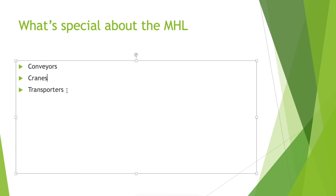And finally, you have the transporters. You already had transporters in the Process Modeling Library in the form of resources, but these transporters are better — you can control the way they move better, and you also have obstacle avoidance and free space movement. So these are the three elements that make the Material Handling Library special. Let's go through each of them.